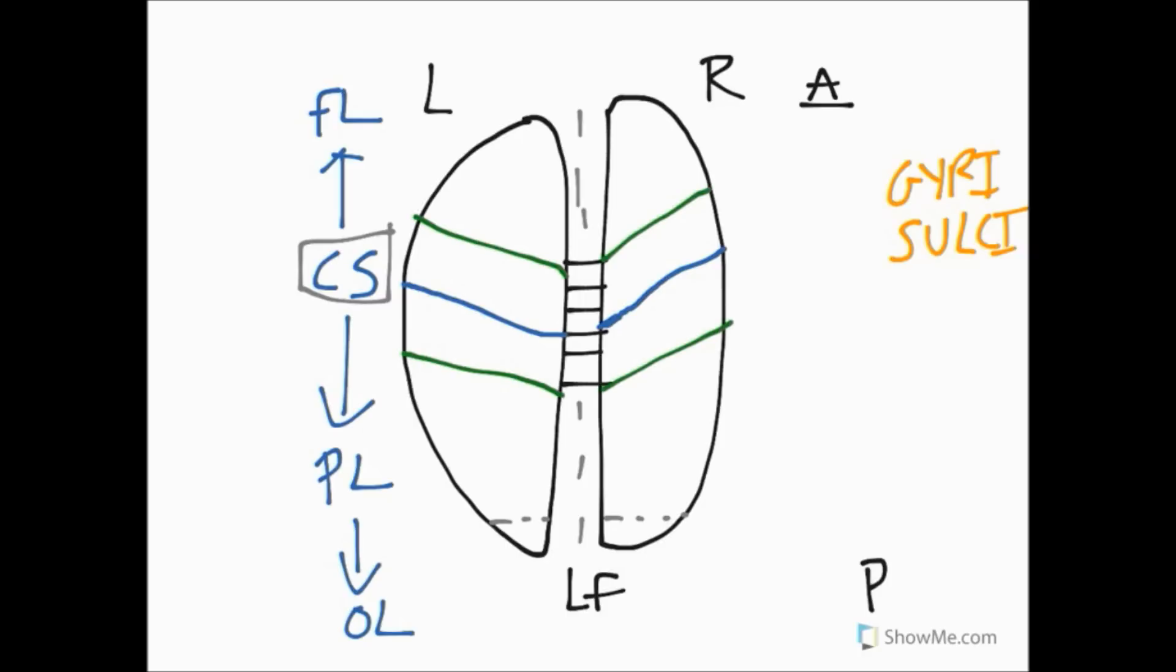The one in the frontal lobe is known as the primary motor cortex. The one in the parietal lobe is known as the primary sensory cortex—one has a motor function, the other a sensory function. These have anatomical names as well: the primary motor cortex can also be called the precentral gyrus, and the primary sensory cortex is often referred to as the postcentral gyrus.